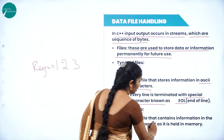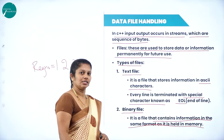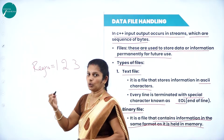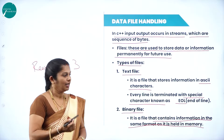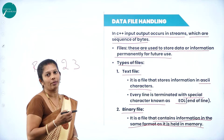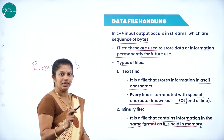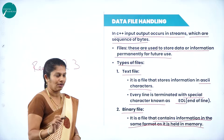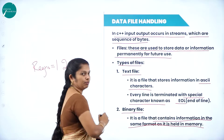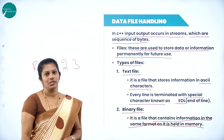A binary file contains information in the same format as it is stored in the memory — that is, in binary format. In a text file we store data in ASCII format using end-of-line, whereas in a binary file we store data in binary format and we do not use the end-of-line concept.